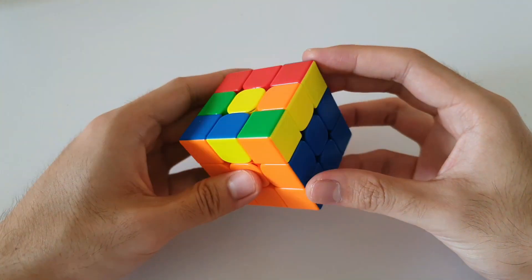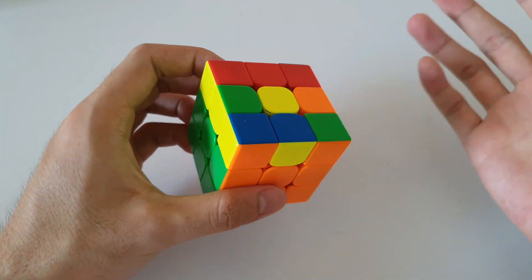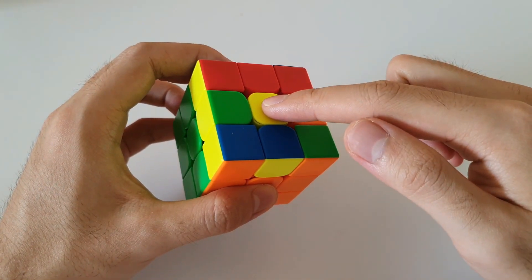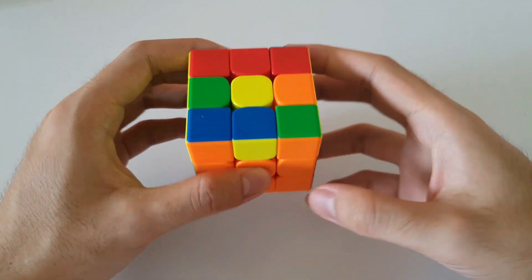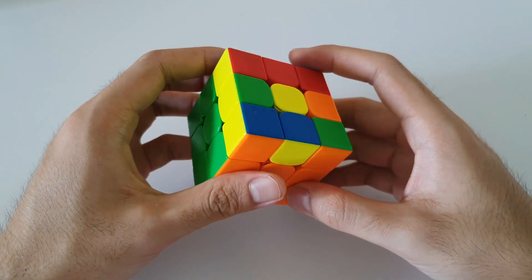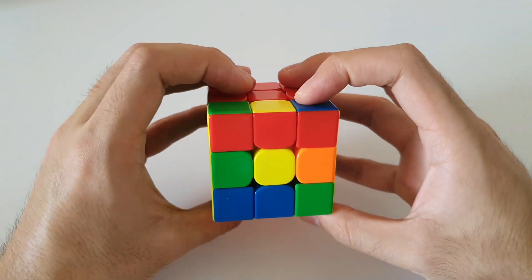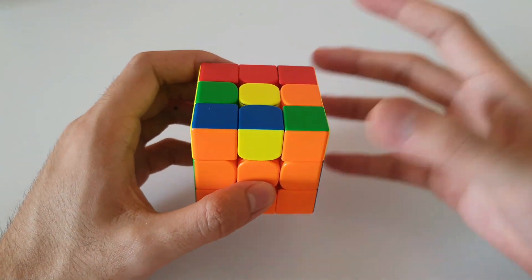Okay, so starting with the first dot case we have this one here. Fairly straightforward to recognize. Single yellow center oriented, no edges or corners oriented on the top layer. We do have these two three by one bars on the left and right side, so this is how you want to hold this case.